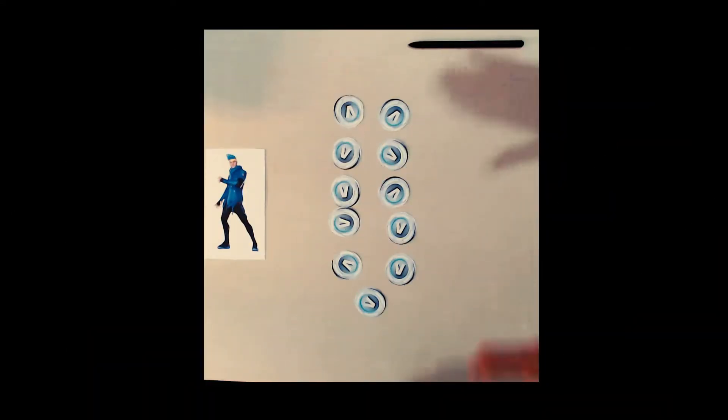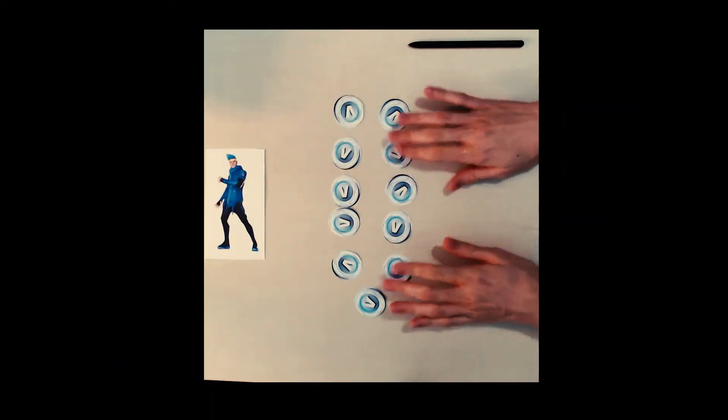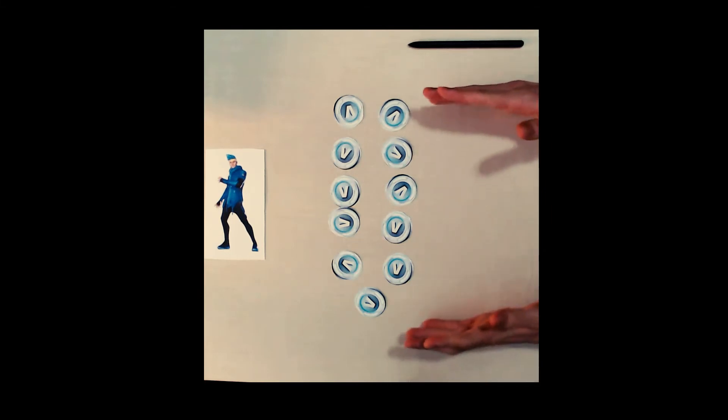So first things first, let me explain how the game works. The game is quite simple, we have 11 coins as you can see here and in each round one of the two players can pick either one, two, or three coins.